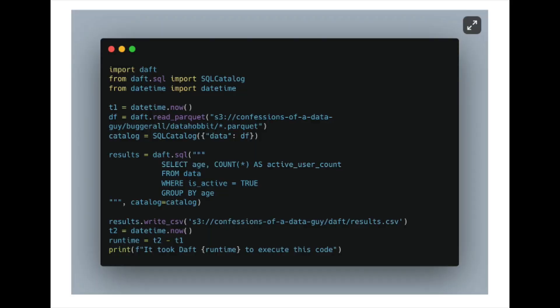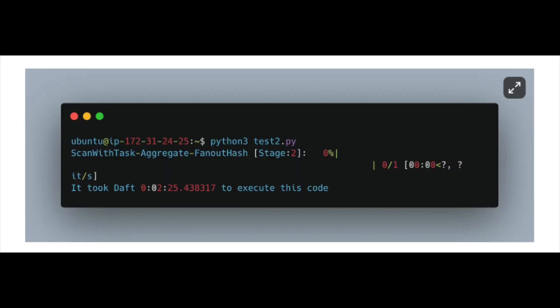Next I did Daft with 10 billion records on S3. Notice how clean and simple the code is — I don't have to do anything with credentials. Daft simply picks up the default AWS credentials from my box on EC2. It also has a SQL context, so I'm just using SQL. It worked like a charm and it was fast: Daft took just 2 minutes and 25 seconds to run the aggregation on 10 billion records of Parquet files and write results back as a CSV to S3.